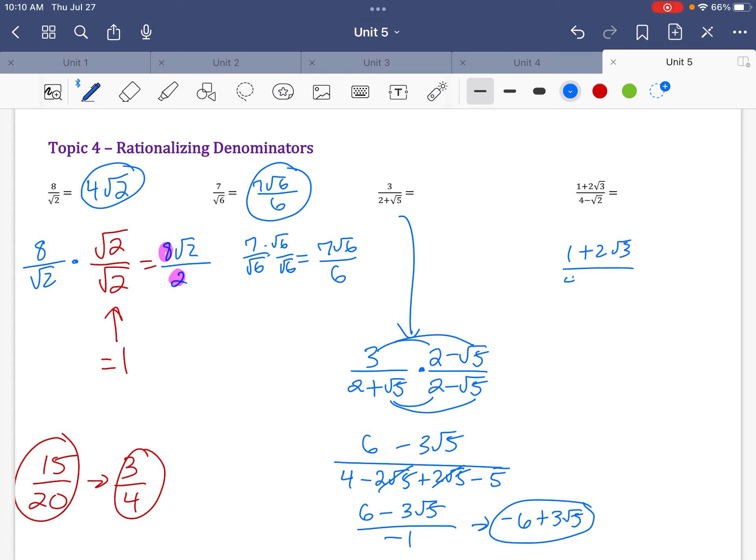Okay, on this next one, I have 1 plus 2 radical 3 over 4 minus radical 2. I multiply by the conjugate of the denominator, 4 plus radical 2. And so this one's just a little harder than the last one.